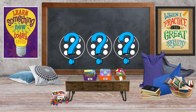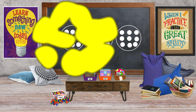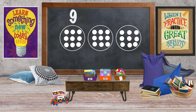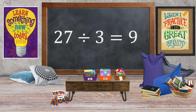How many in each group? Let's count: 1, 2, 3, 4, 5, 6, 7, 8, 9. We have nine counters in each group. We've solved our division sentence: twenty-seven divided by three equals nine.